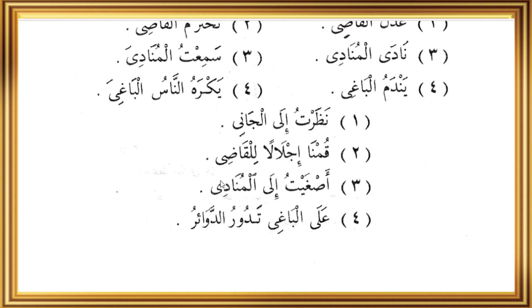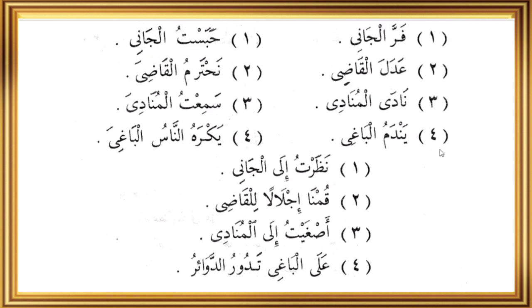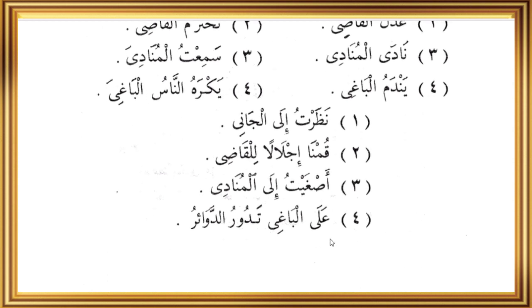Al-munadi si penyeru dalam keadaan marfu'. Sami'tu al-munadi - saya mendengar al-munadi, dalam keadaan mansub, dengan fathah zahir. Asukaitu ilal-munadi - aku mendengarkan kepada penyeru, dalam keadaan majrur. Contoh keempat: yandamu al-bagi - orang yang melampaui batas itu menyesal, al-bagi marfu'. Yakrohu an-nasu al-bagi - manusia tidak suka kepada al-bagi yang melampaui batas, al-bagi mansub. Tadurud dawa'ir alal-bagi - berlaku hukuman atas orang yang melampaui batas, al-bagi majrur.